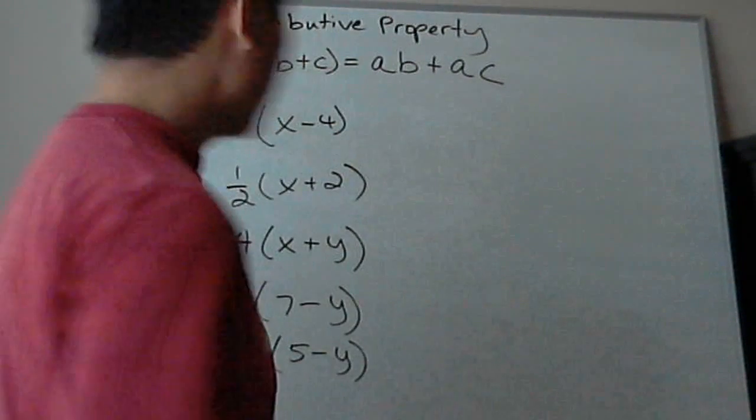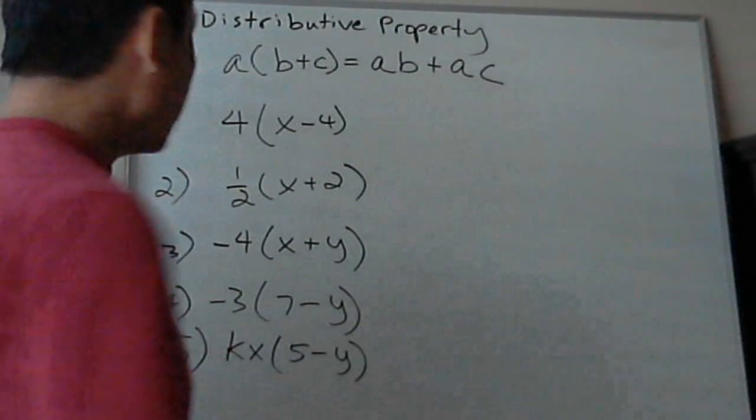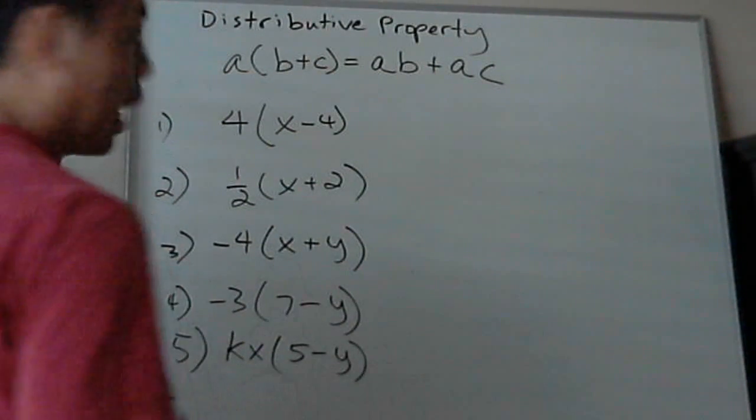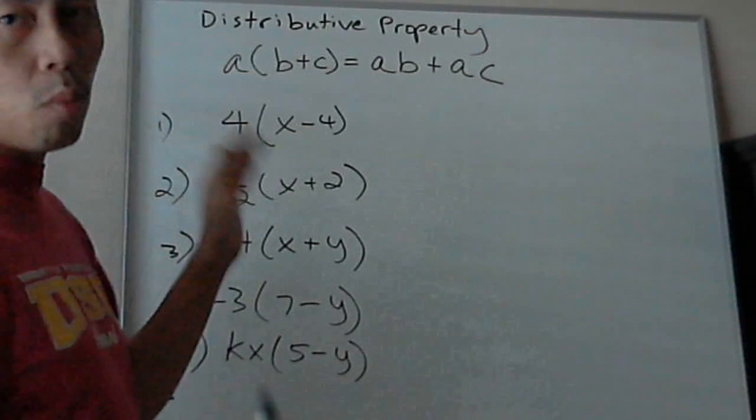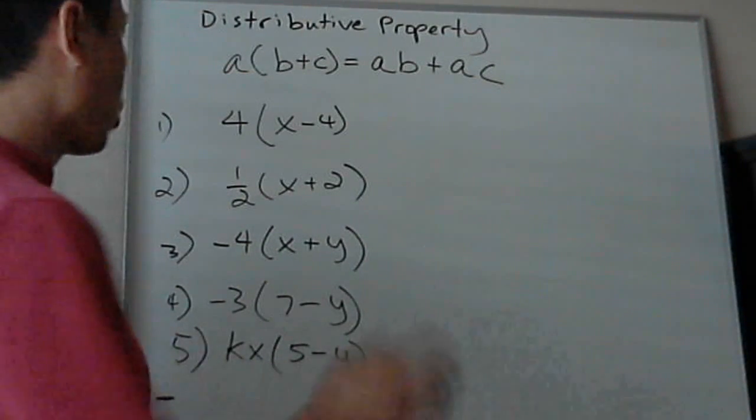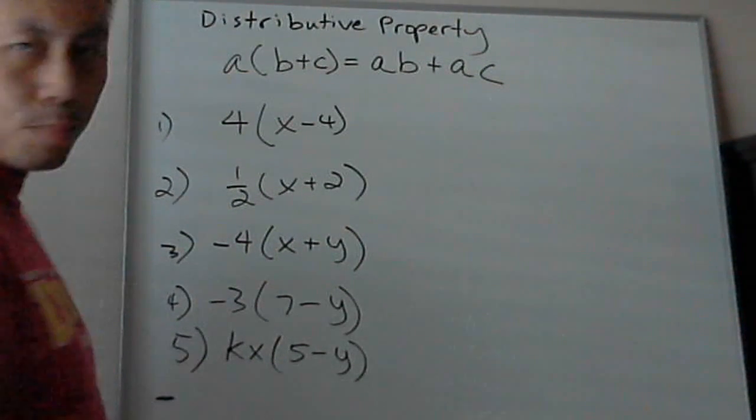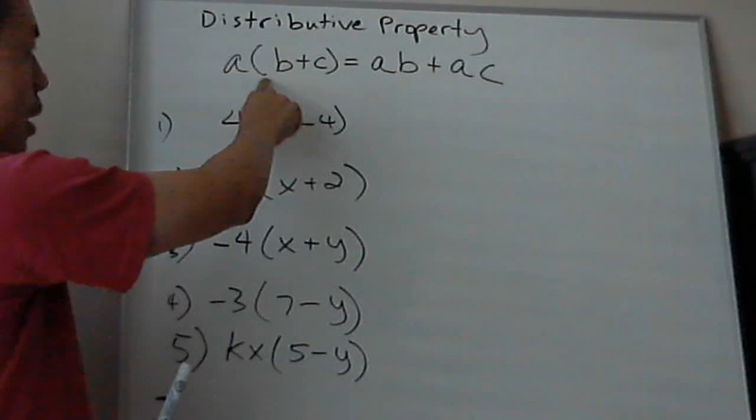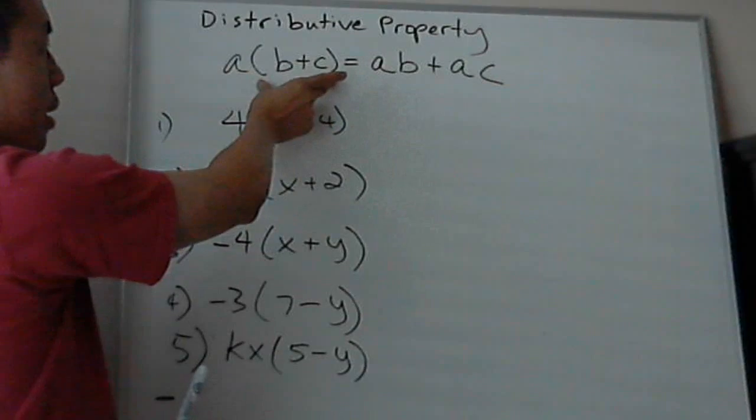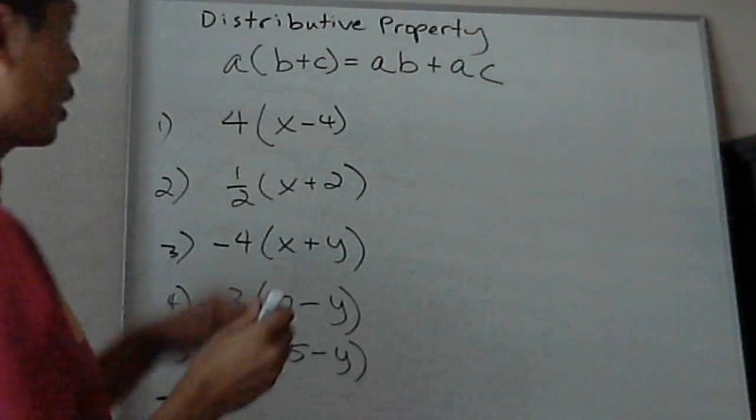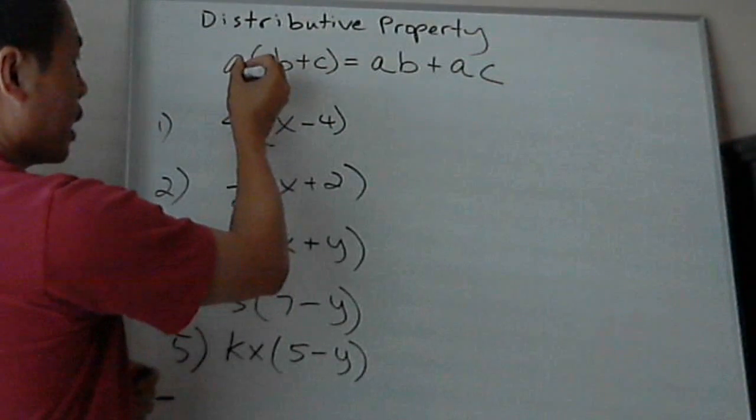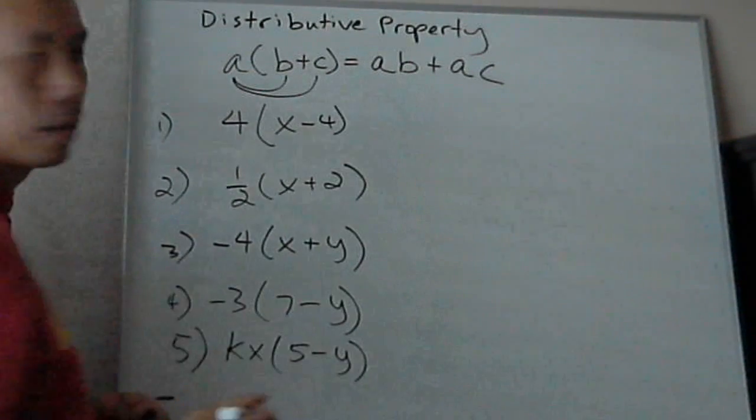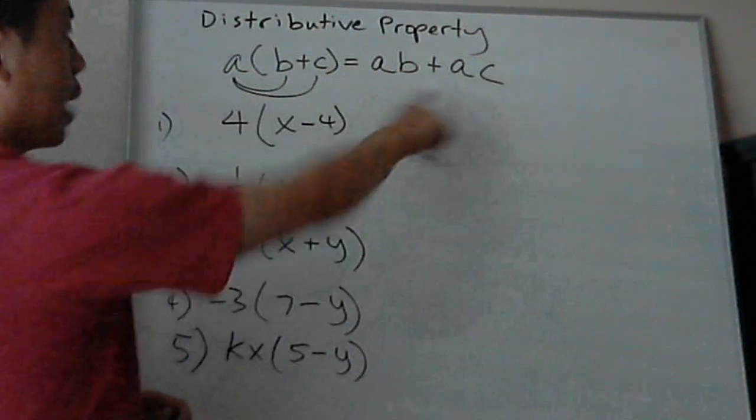Our next topic is the distributive property, and it's used a lot. You're going to have to get very familiar with this and understand why and when you use it. It's not a difficult concept - it's just when you have something outside parentheses and you're multiplying the things inside the parentheses. It's basically a times b plus c equals ab plus ac.